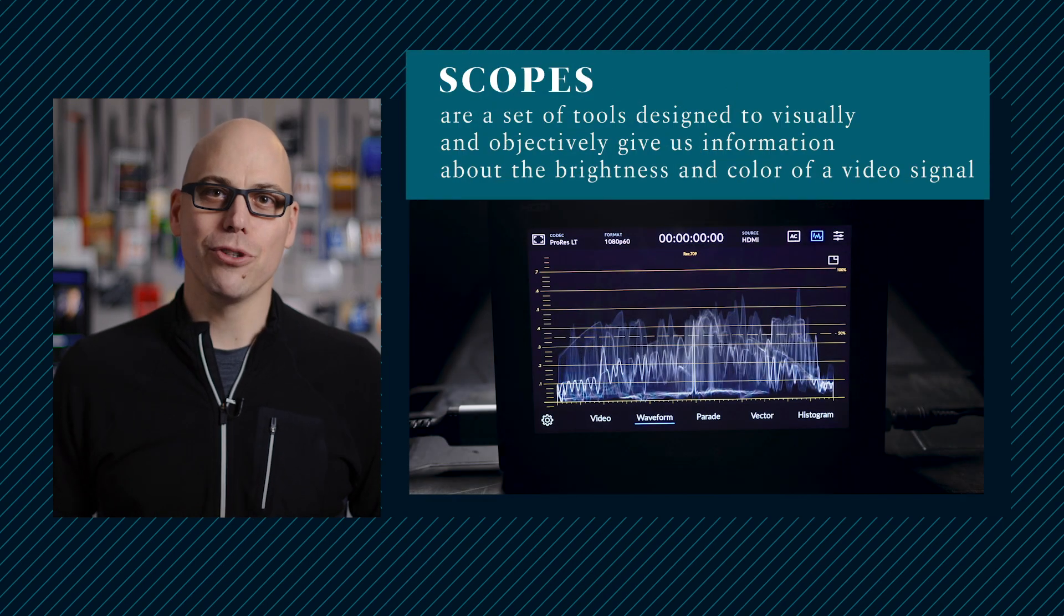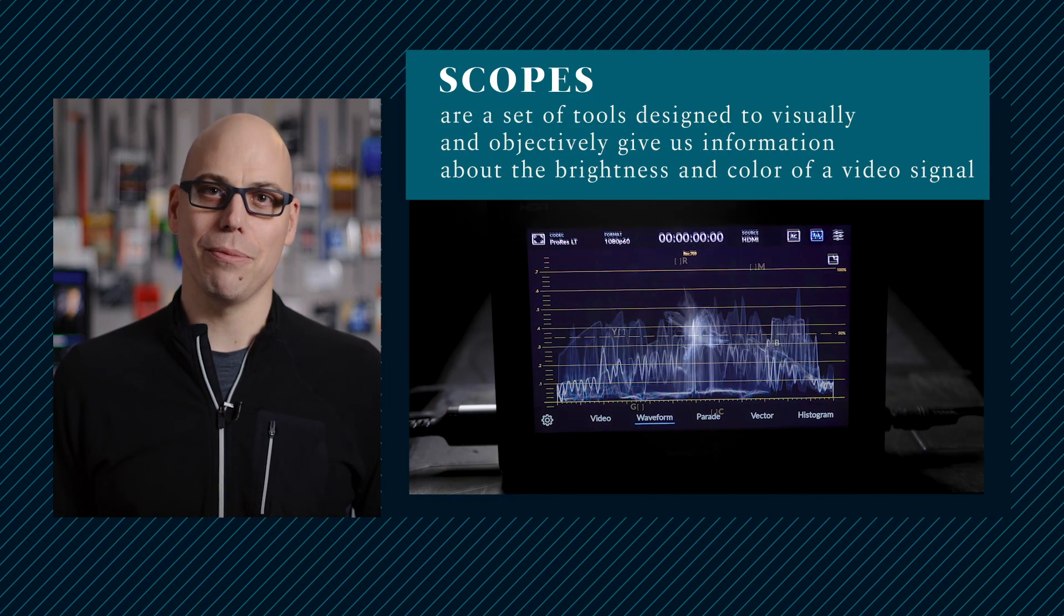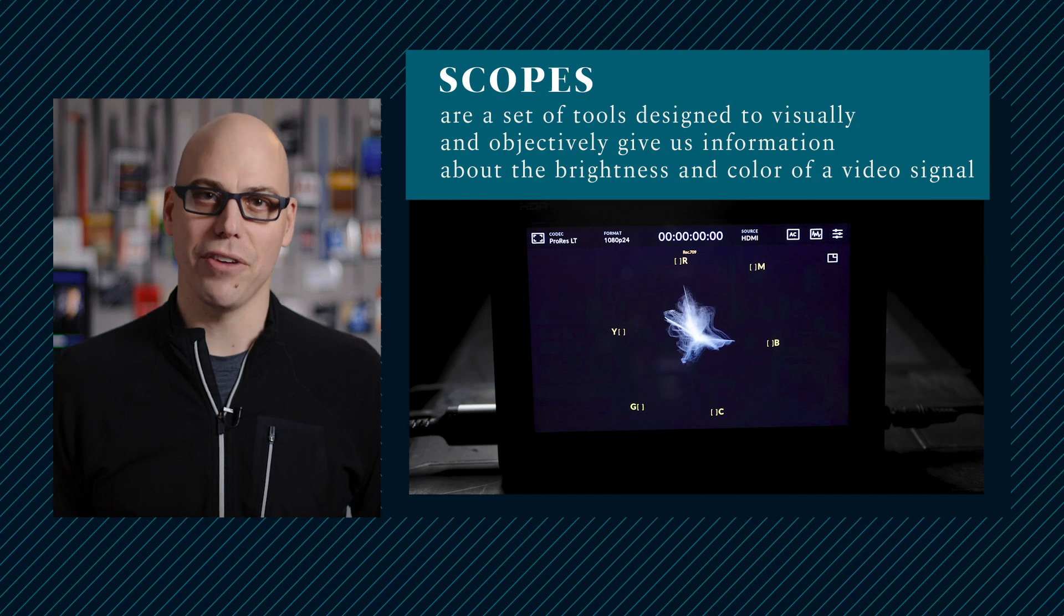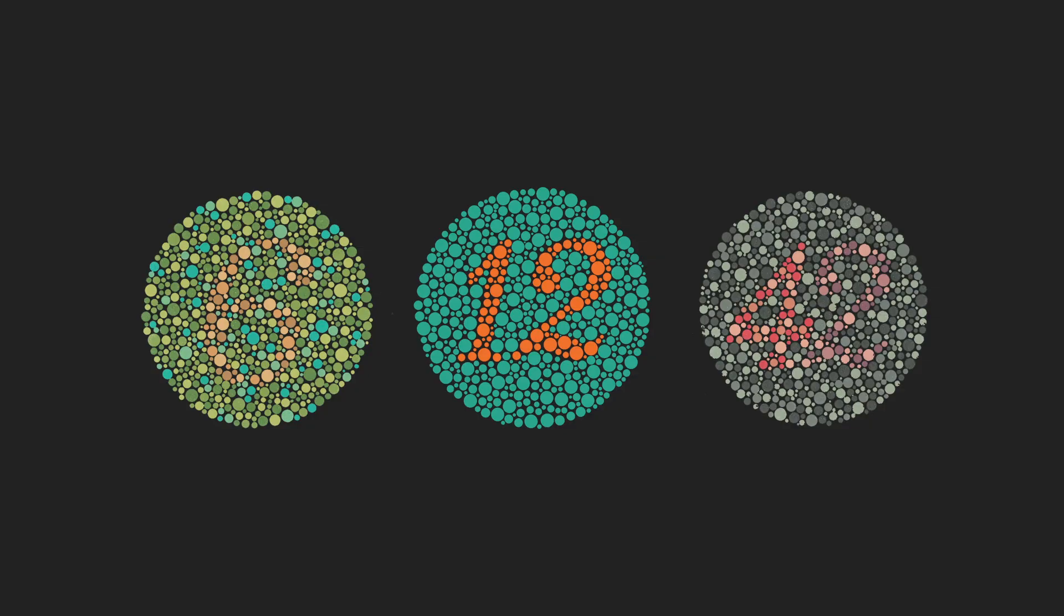Scopes are a set of tools designed to visually and objectively give us information about brightness and color of a video signal. Color perception can vary greatly from person to person, and a scope eliminates human bias by presenting measurable information about exposure, white balance, hue, saturation, and more.